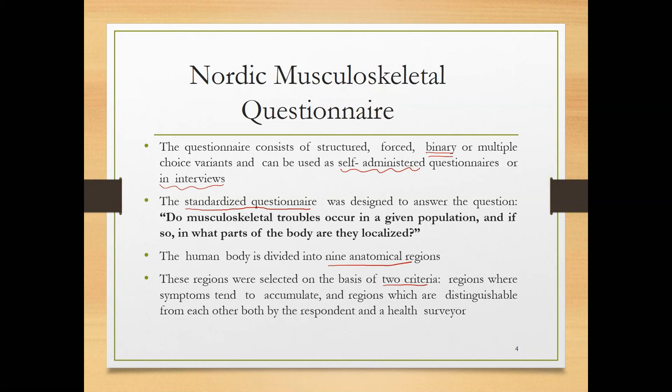Generally, there are some major portions of the body — some joints — where the symptoms of musculoskeletal problems accumulate or where pain is felt. The second important factor is the validity of the questionnaire, so it should be easy to understand and easy to fill. The nine parts selected are easy to differentiate from each other, making the question clear to the person being asked and easy to fill.